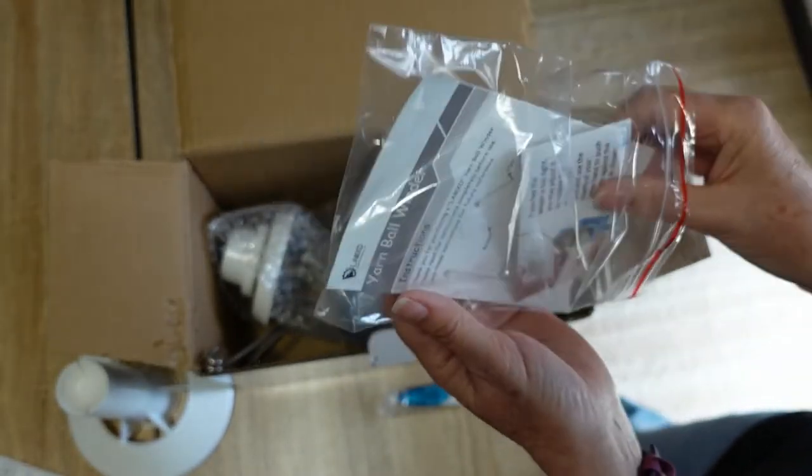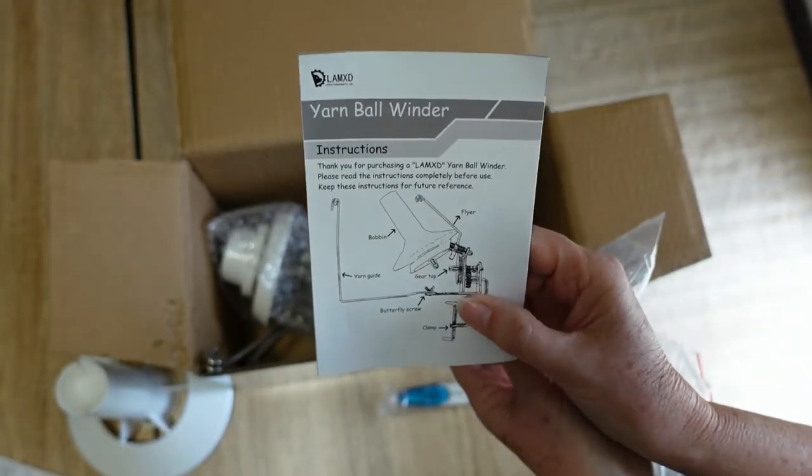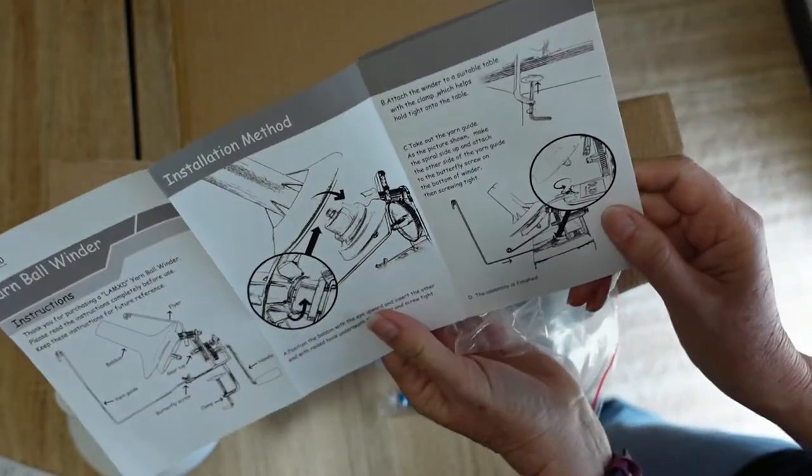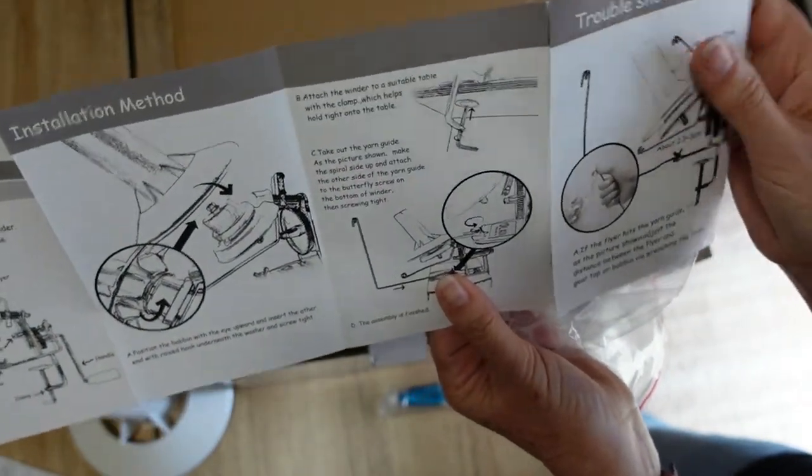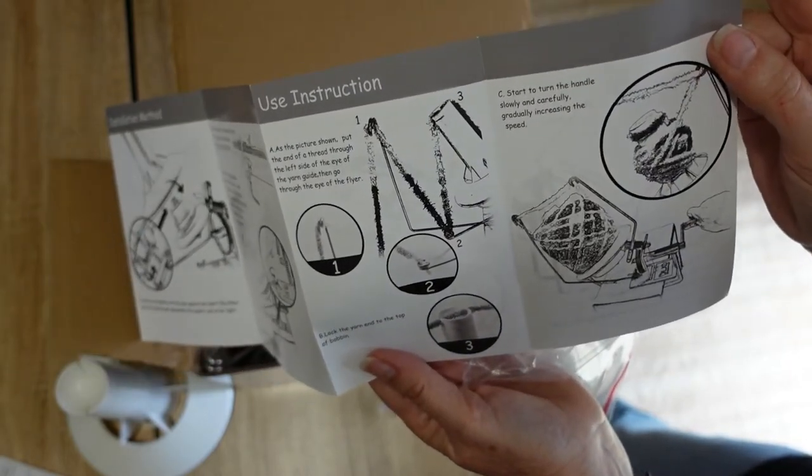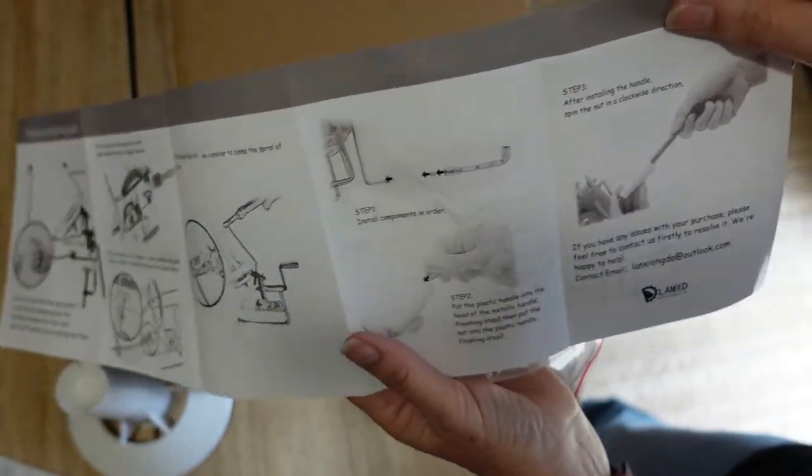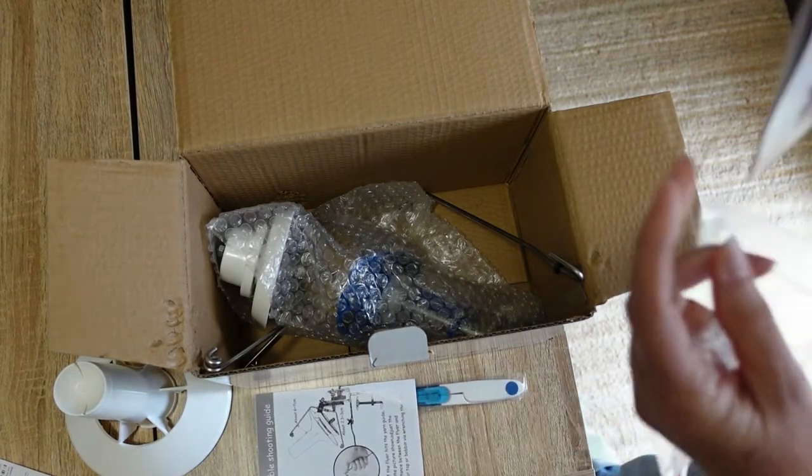This has instructions. We have a small instruction booklet telling you how to put the machine together, which is handy, and how to use it, which you've seen me do before. And then on the back is a troubleshooting guide. That's really great. Some instructions. Didn't really expect to get instructions with it.